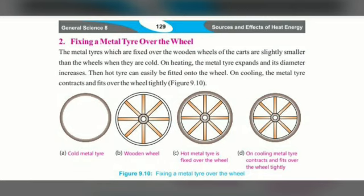First of all, the metal tire is smaller than the wooden wheel. The wooden wheel is larger. We will take the smaller metal tire to fit it over the large wooden wheel.